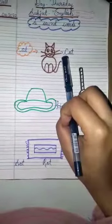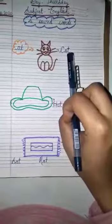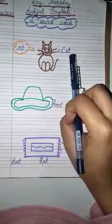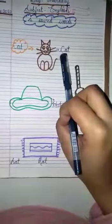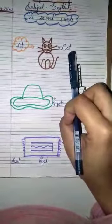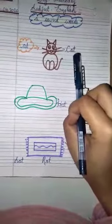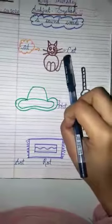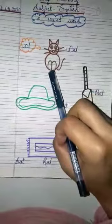We know the sound of letter C is C and the sound of A-T is A-T. So, when we mix all these sounds together, C-A-T, it becomes cat. Here is a picture of cat.